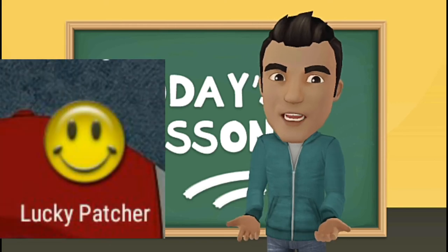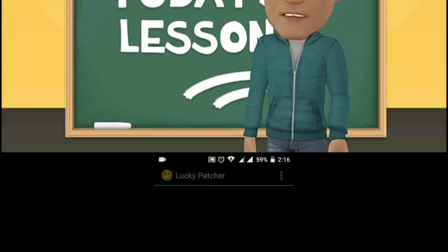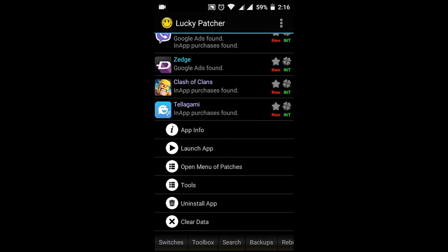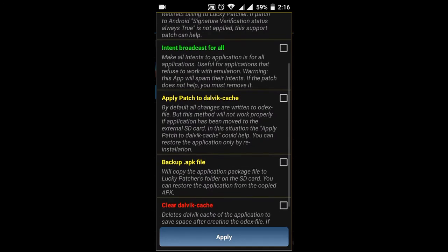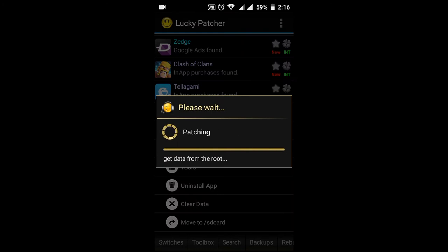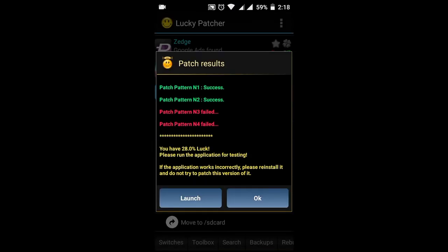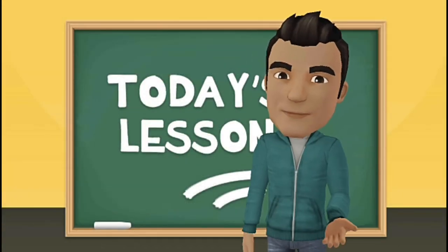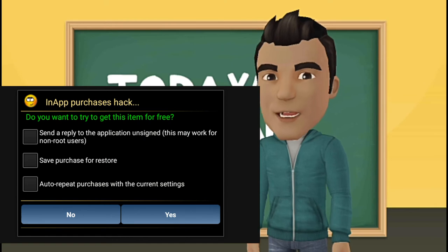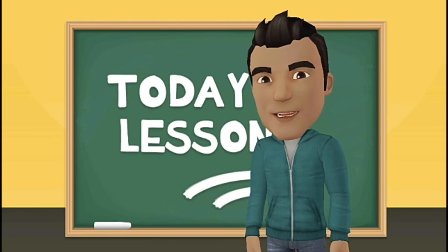You have to download Lucky Patcher. I have also given the link of this app if you have root access in your phone. After patching this app, you can unlock anything for free. You will see this type of window. Lucky Patcher's app purchases hack is very useful and now you can make an animated lecture.